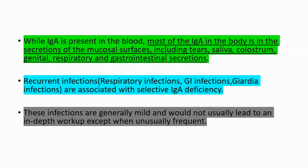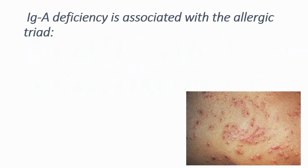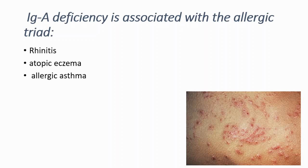These infections are generally mild and would not usually lead to an in-depth workup except when unusually frequent. IgA deficiency is associated with the allergic triad: first, rhinitis; then atopic eczema; and allergic asthma.